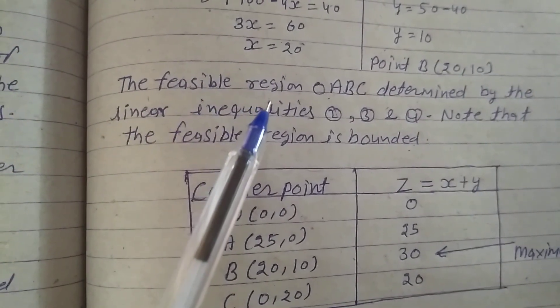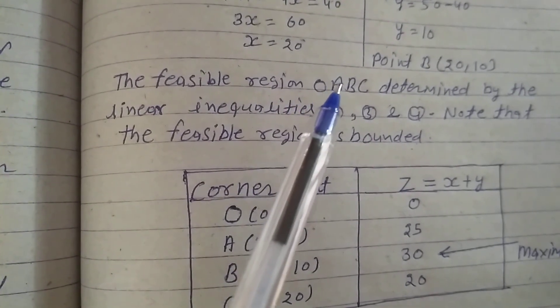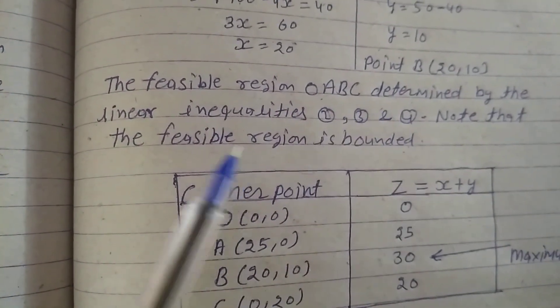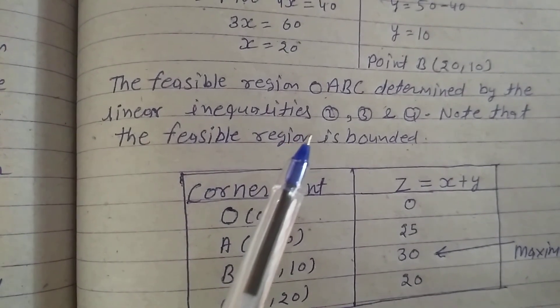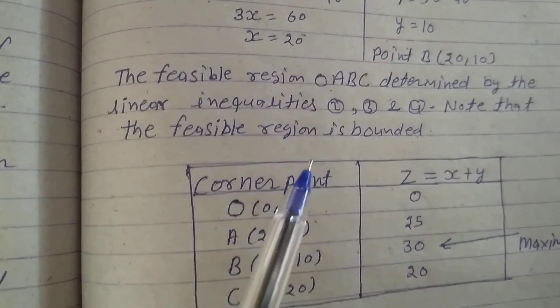The feasible region is bounded region OABC, determined by the linear inequalities 2, 3, and 4. Note that the feasible region is bounded.